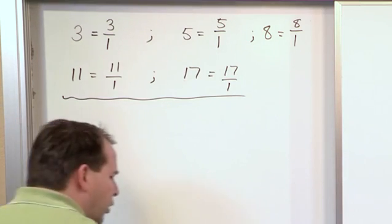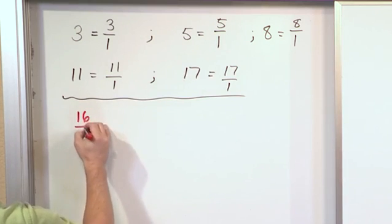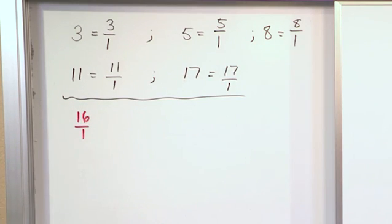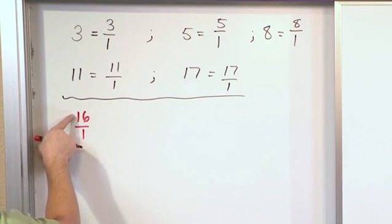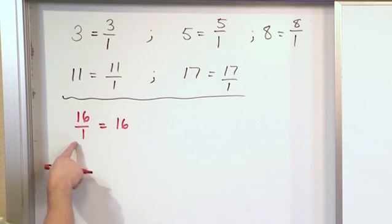Now, if I wanted to go backwards, I can certainly go backwards. What if I were given this fraction, 16 over 1, and I was told to simplify this fraction? Well, the first thing I'm going to try to do when I simplify a fraction is see, can I just divide the thing and simplify it that way? In this case, I can see 16 divided by 1. Of course, it divides evenly. It gives me 16. So to simplify this, I can just write the whole number 16 down.